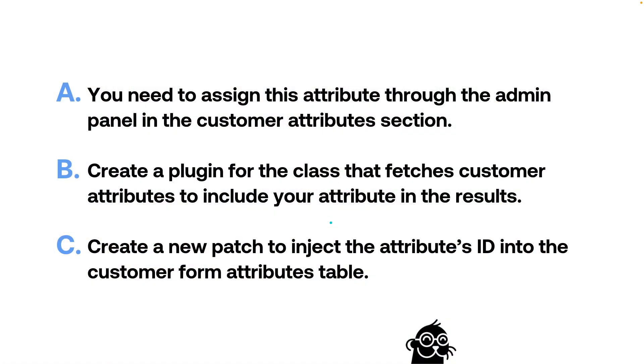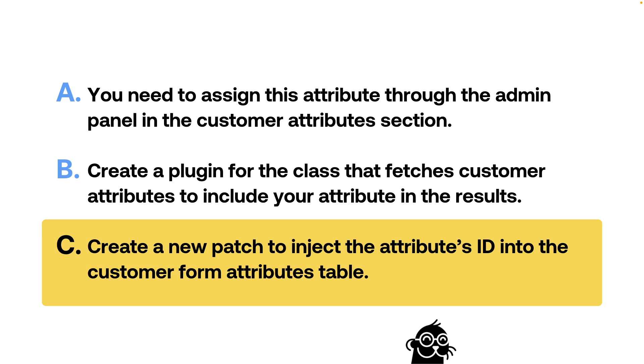Let's look at answer C, which you've probably guessed by now is the correct answer. I'm going to give you the reason why — I don't like just saying that's the correct answer and moving on. We have to look and see why this is. To understand why, let's go look at the Adobe Commerce code, which is always the source I go to when identifying answers to problems.